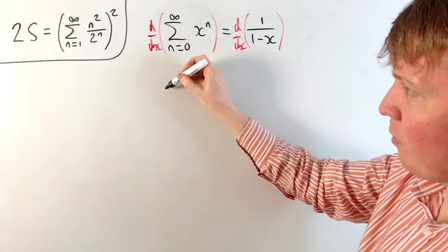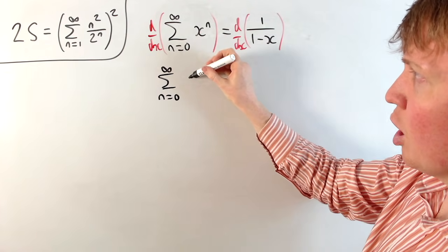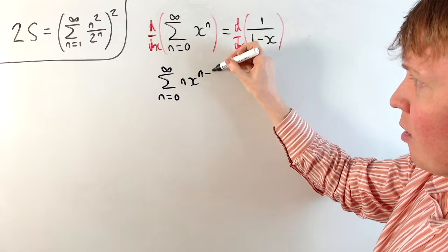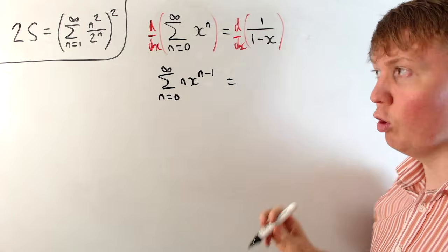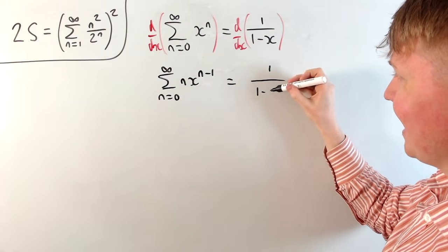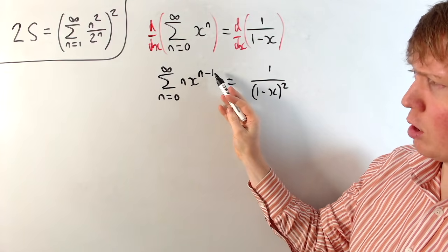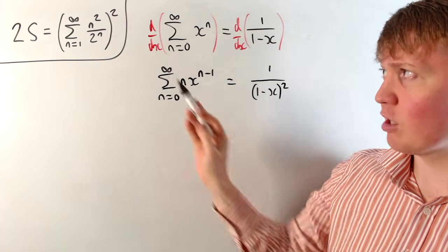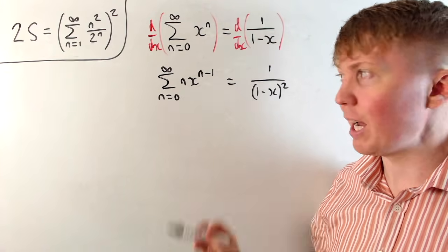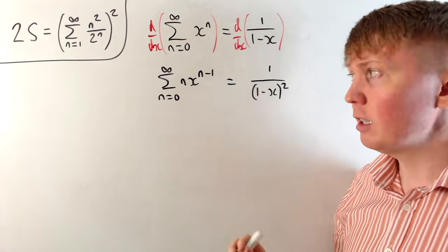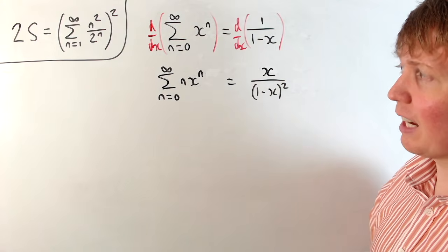Differentiating term by term on the left-hand side gives the sum from n equals 0 to infinity of n times x to the power n minus 1. On the right-hand side, differentiating using the chain rule gives 1 over 1 minus x all squared. Since we've got x to the n minus 1, to get x to the n we multiply by x on both sides. This turns the left side into x to the n and we replace the right-hand factor accordingly, making us ready to differentiate with respect to x again.